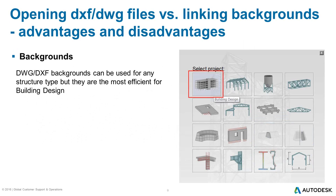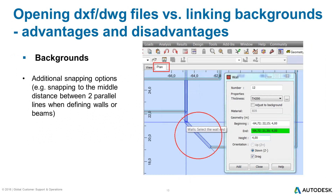Backgrounds can be used for any structure type; however, the best choice is the building model type, which has a unique plan view tab — the most efficient way of switching between display of backgrounds for each of the floors. This slide additionally illustrates why the building model type is the best choice: in addition to standard snapping points, there are some additional snapping features specific to backgrounds which are available only in the plan view of the building design.